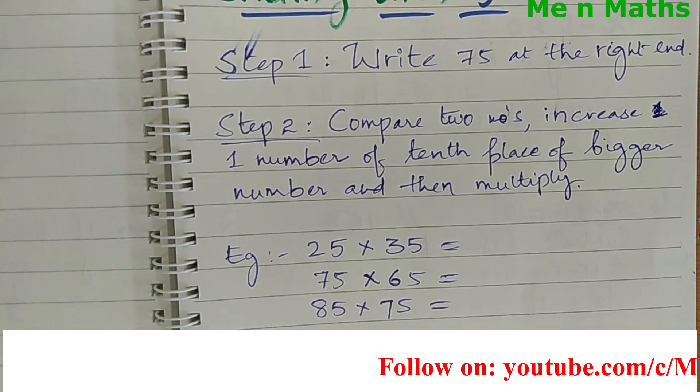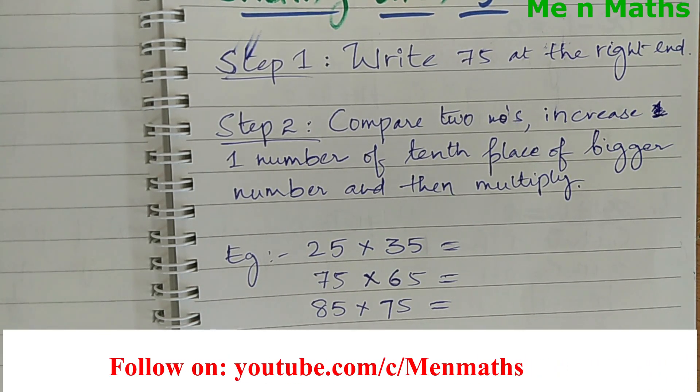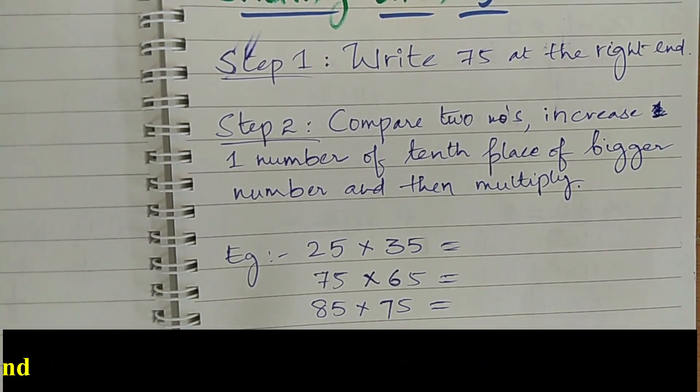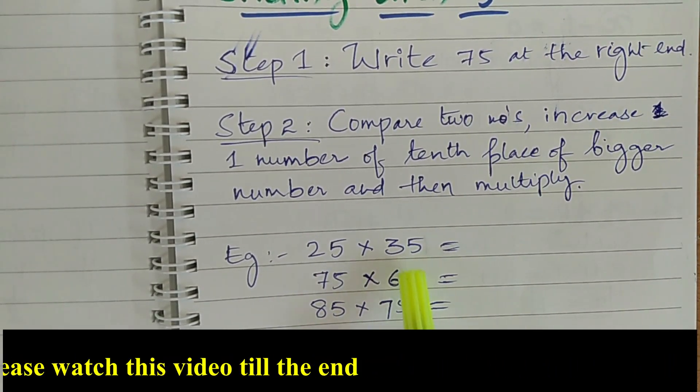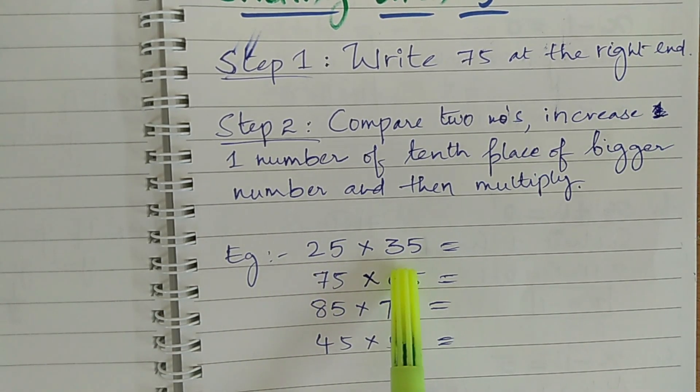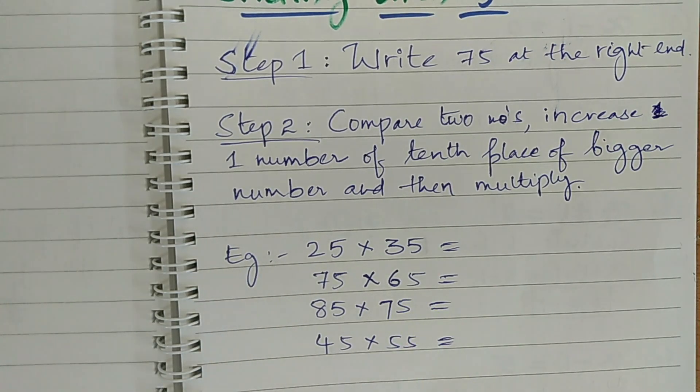A trick, Sif or Sif, continuous base ke liye hi ishtamal kiya jata hai. Continuous base, what it mean? I will show you here. Here, 25 into 35. Here base is 20, after 20, the base is 30, after 30, the base is 40, then after 40, the base is 50. Like this.